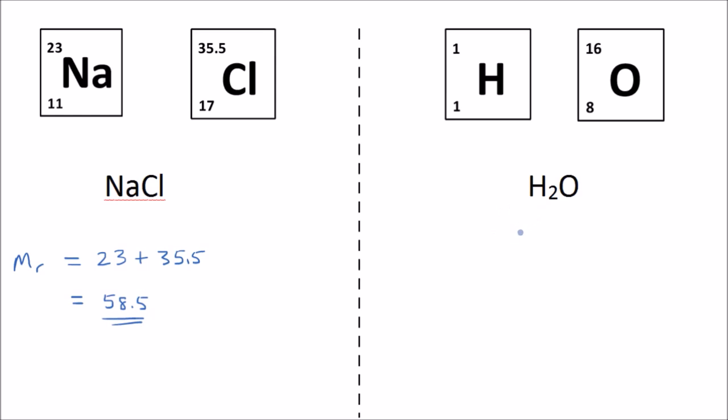So on this side we have water, H2O, and we're going to work out the relative formula mass of H2O. It's worth noticing that there are two hydrogens here. So it's going to be two times the relative atomic mass of hydrogen, and we add that to the relative atomic mass of oxygen. And that's going to give us a relative formula mass or relative molecular mass of 18.